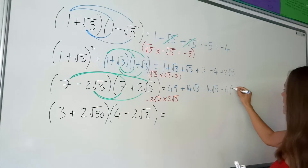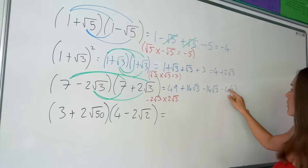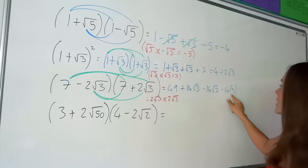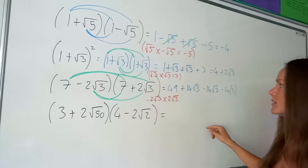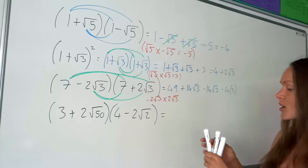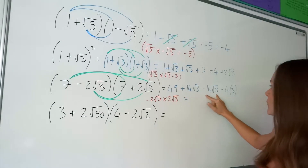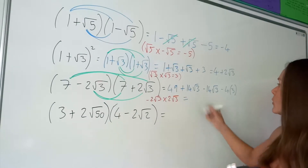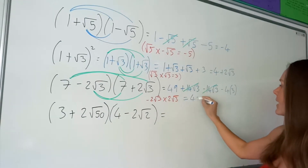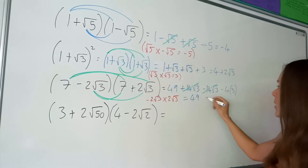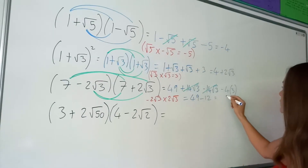Remember you're multiplying these things together, so you need to either write multiply or use brackets, and remember to multiply that negative 4 with the 3 when simplifying. I've got a positive 14 root 3 and a negative 14 root 3, so those go to 0. Then I've got 49, and minus 4 times 3 is negative 12. So I just need to subtract 12 from 49, which gives me 37.